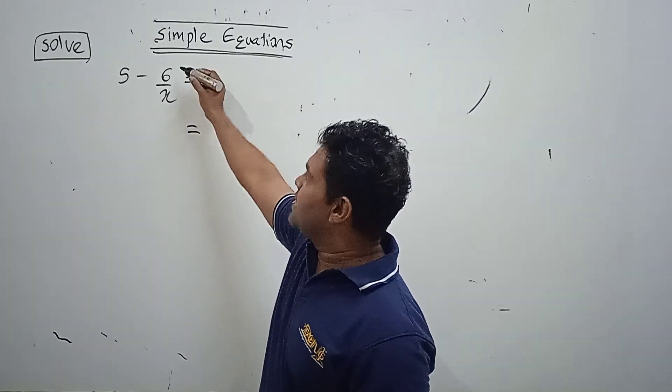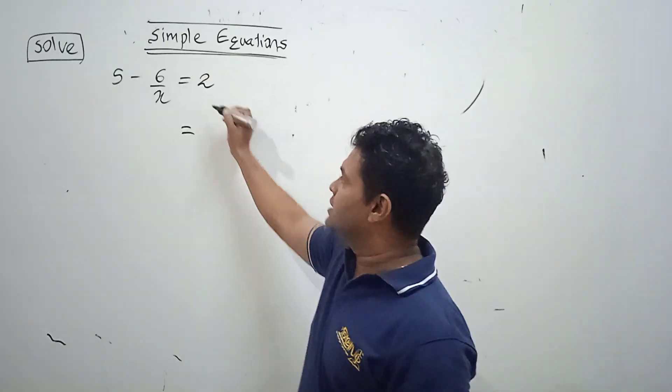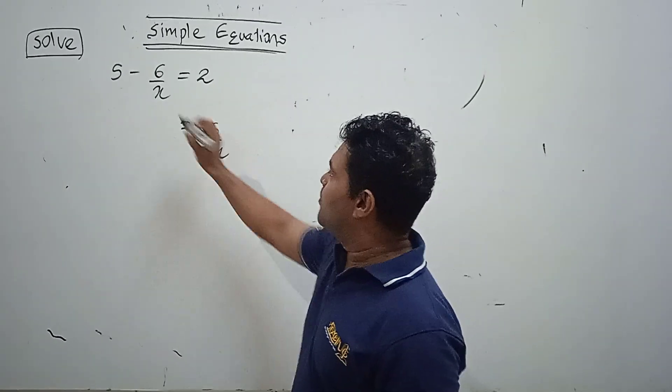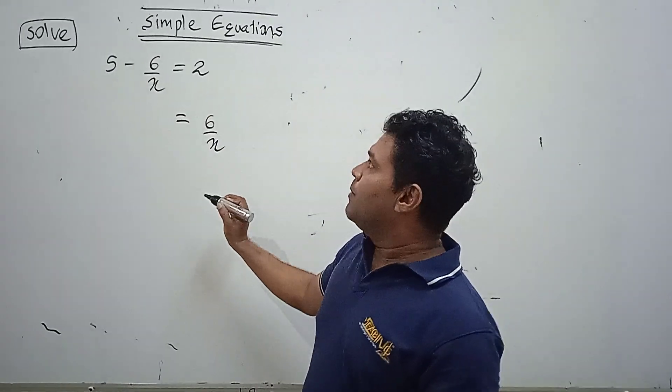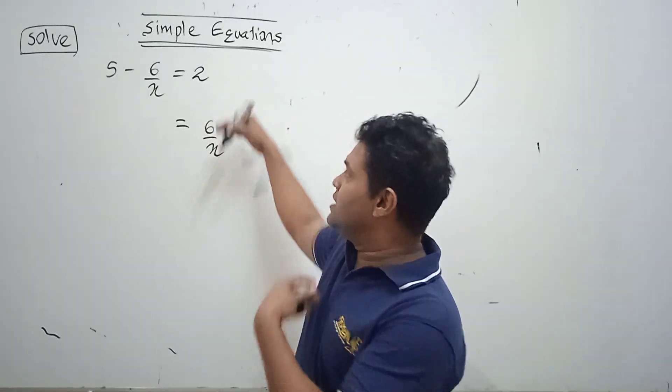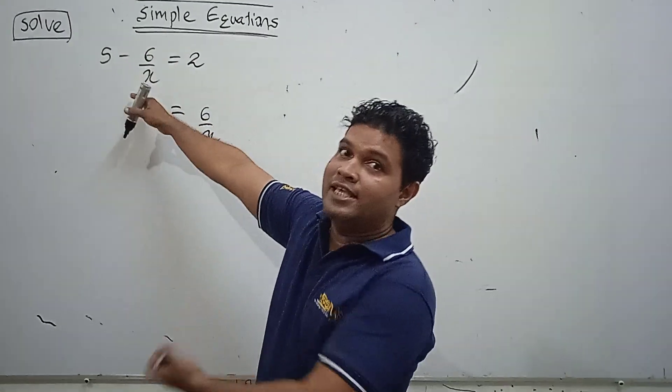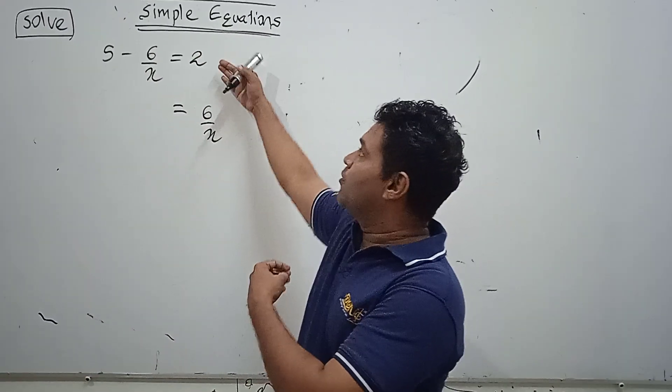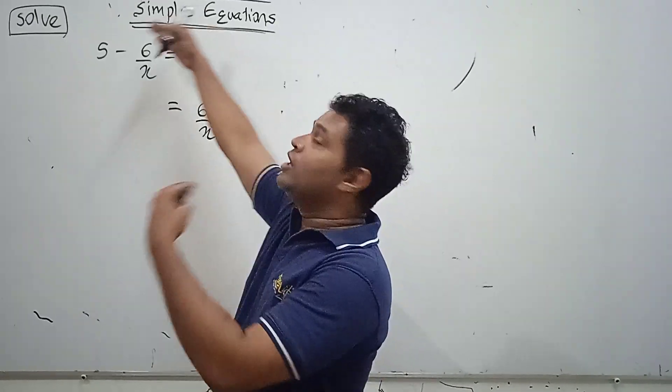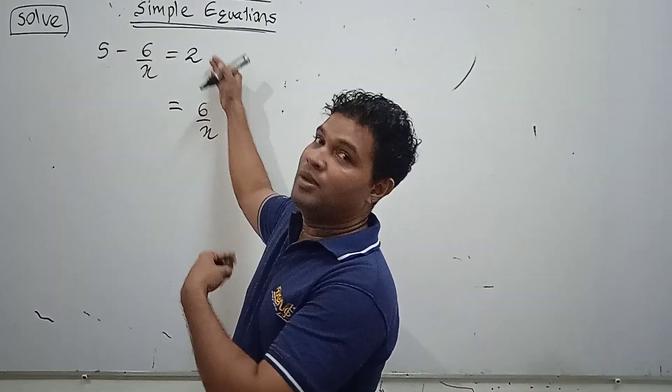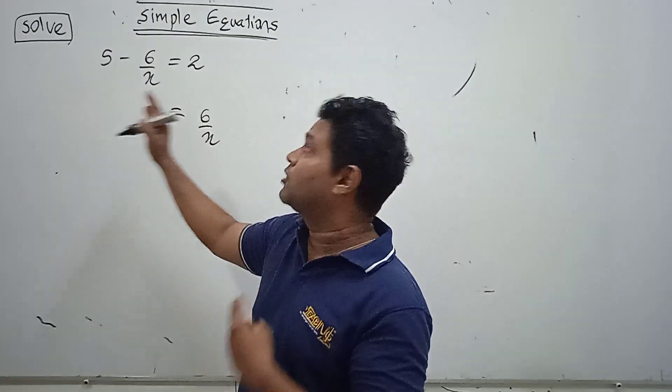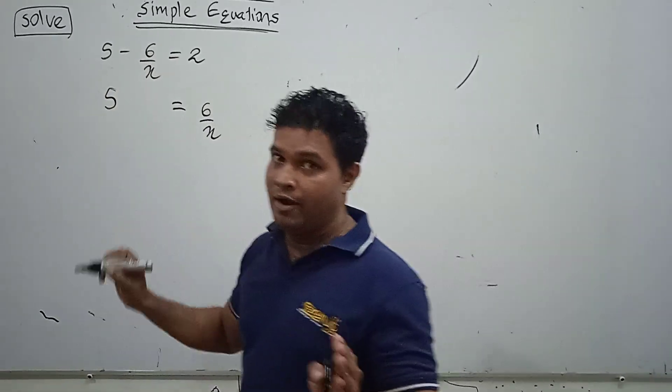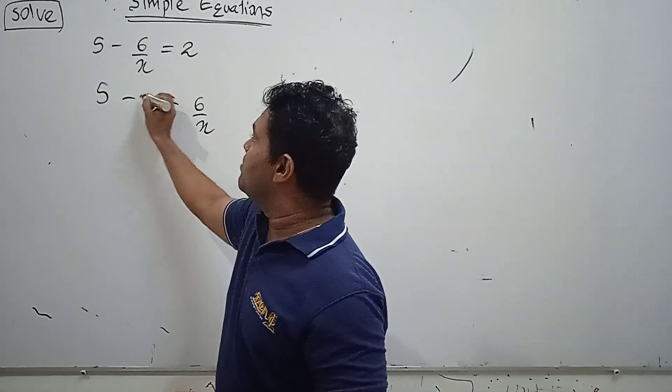We can bring this 6 over x to the other side like 6 plus 6 over x. But the 2 we can't write on this side because we have brought 6 over x to this side. Therefore, plus 2 we have to change to the other left side, so plus 2 will become minus 2. But don't forget to write that 5.